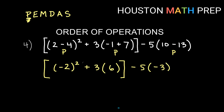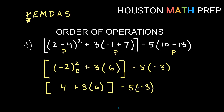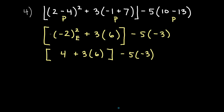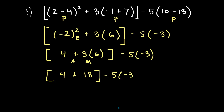Inside the brackets we still have an exponent and a multiply. We do the exponent next: negative two squared gives four. Then we have four plus three times six. The multiply comes before the add in PEMDAS, so three times six is 18, giving us four plus 18 inside the brackets. We still have one more operation inside the brackets — the parentheses aren't fully done yet — so four plus 18 gives 22 inside the brackets.